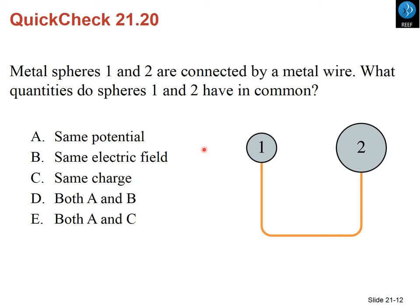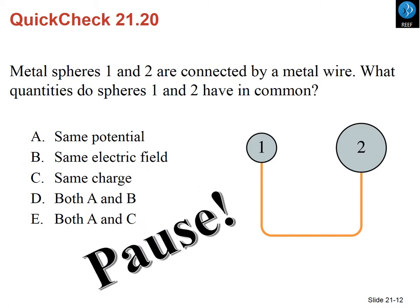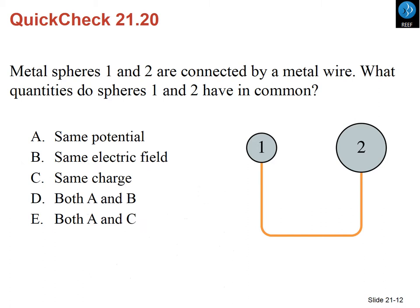Consider two metal spheres — a small one and a larger one — connected by a metallic wire. What do spheres one and two have in common: the same potential, the same electric field, the same amount of charge, or both potential and charge? The answer is that they are at the same potential because they are connected by the metallic wire.